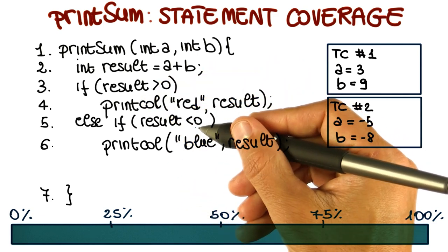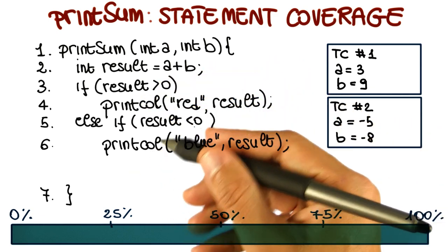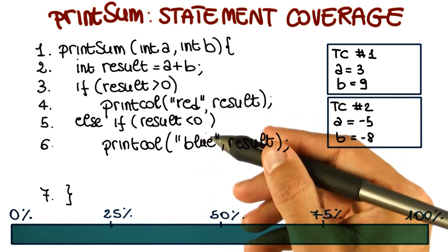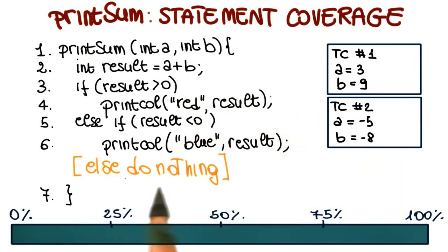And otherwise, in the case in which neither of these two conditions is true, nothing really happens. So we're going to make that explicit. We're going to say here, otherwise do nothing, which is exactly our problem. The code does nothing in this case where it should do something.